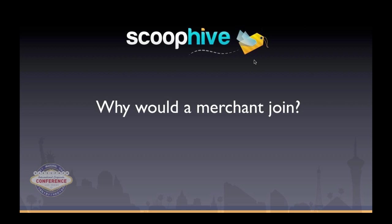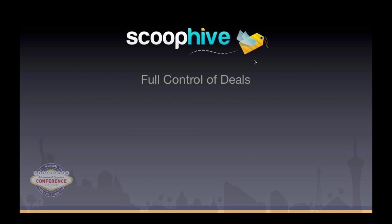Why would a merchant join our program? First, they get full control of their deals — they're in charge of when their deal goes live, how much it's for, how many coupons can be redeemed, and when their deals run. They can schedule out their deals for an entire year. So if a merchant says they don't have time to change their deal every week, with the Scoop Hive deal calendar system, they can schedule everything to go live and turn off automatically without ever having to do anything.